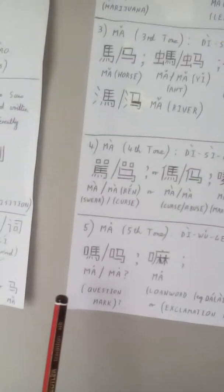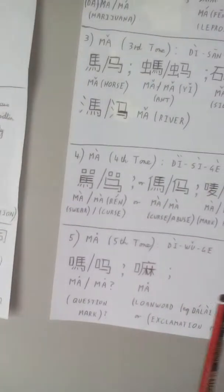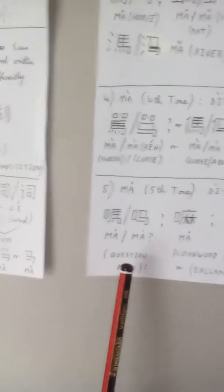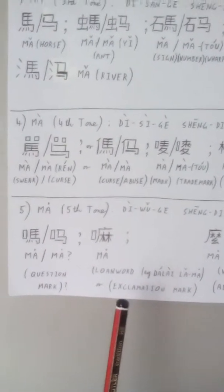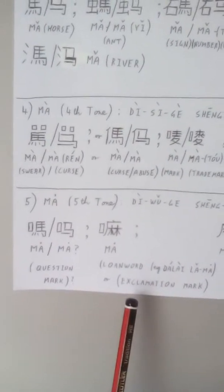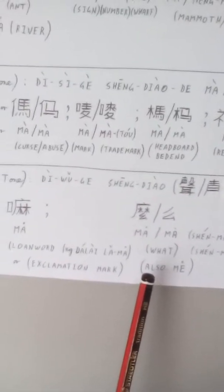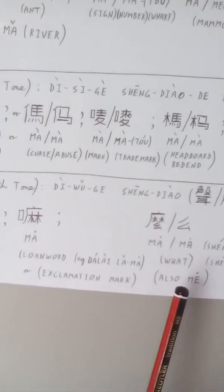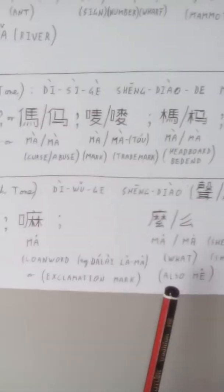And the fifth tone 马, which is pronounced 吗, the 轻声调的吗, can be a question mark, or it can be a loan word. 吗 can also be an exclamation mark. And finally, this 吗 can mean 'what', also pronounced 吗, which is 什么. This just means what. Thank you.